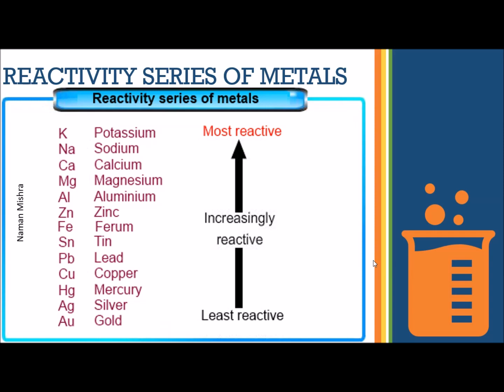So these seven elements — potassium, sodium, calcium, magnesium, aluminium, zinc, and ferrum — can replace tin, lead, copper, mercury, silver, and gold, which is six elements. The first seven elements are categorized as most reactive and the last six as less reactive. So this was the reactivity series — let's move on to the examples.